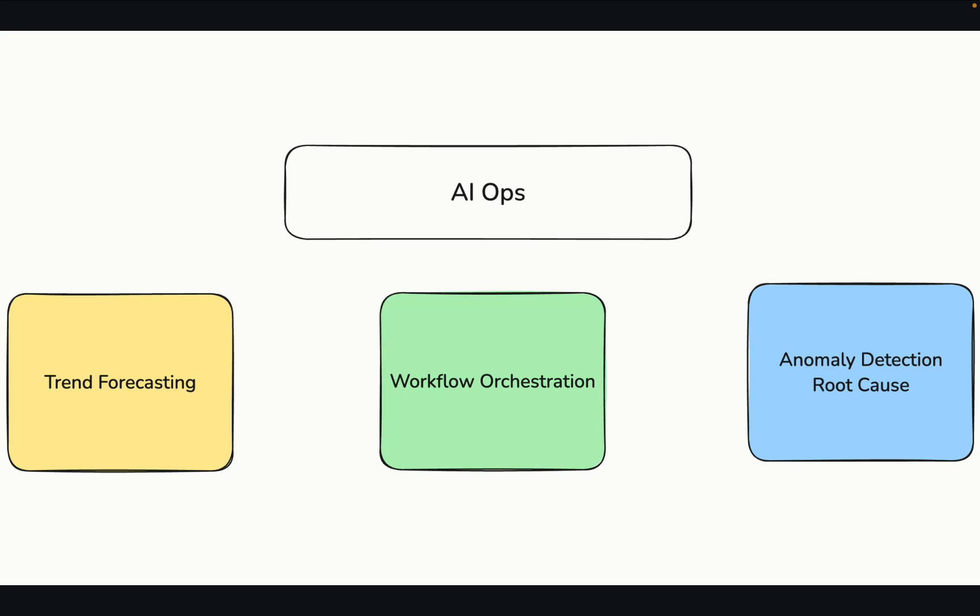Here is a simple diagram. AIOps helps you do trend forecasting — in the future you may be having some anomalies. It goes through your data and your logs, tries to find patterns, and detects what problems can arise in the future. So it gives you alerts and asks whether it can go ahead and fix the problem. It's like an assistant doing forecasting, workflow orchestration, anomaly detection, and root cause analysis.